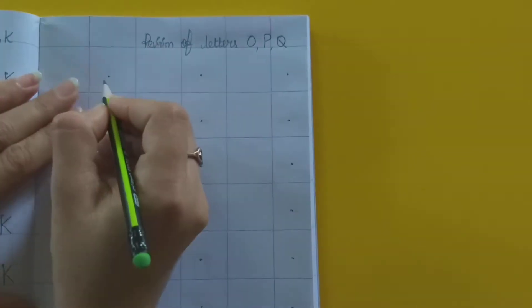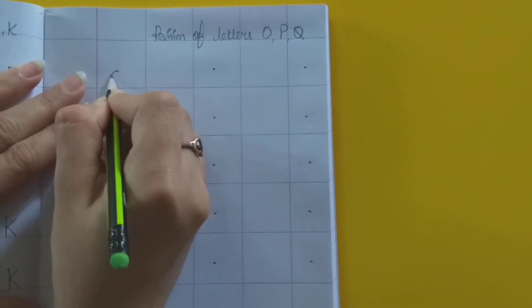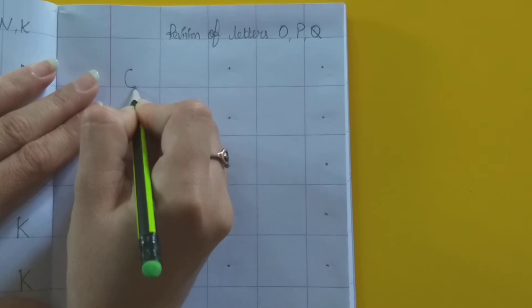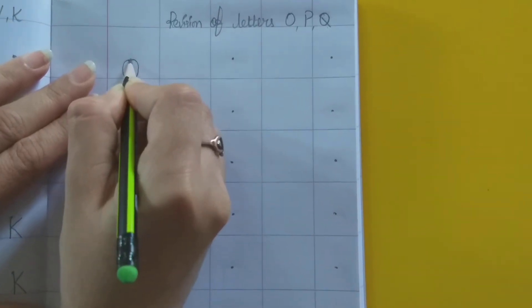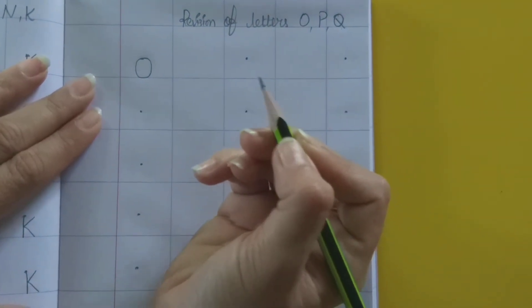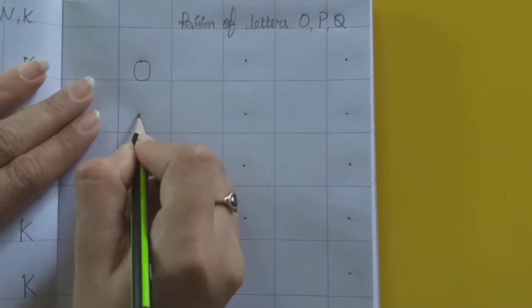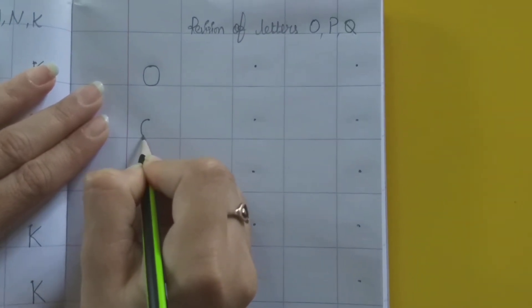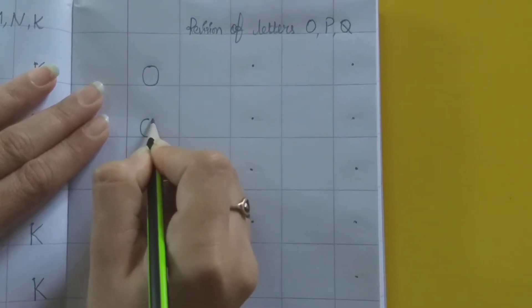First we will write O. Come down, then go up. Toh konsa letter bana bachcha? O. First slowly slowly go down, then go up.